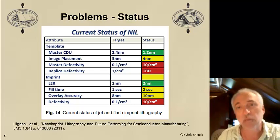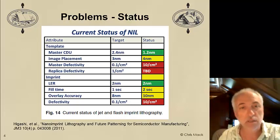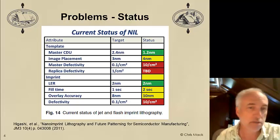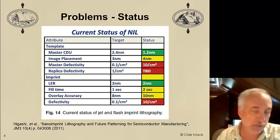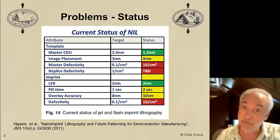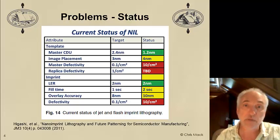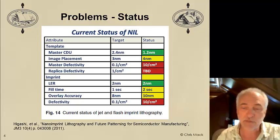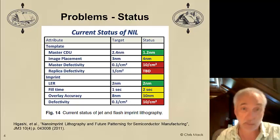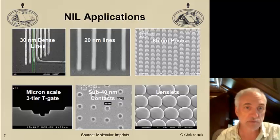Maybe, just maybe, nano imprint lithography will be a viable solution for semiconductor manufacturing. But if not, there are other applications for nano imprint besides semiconductor manufacturing where it is being considered and, in fact, sometimes being used now.